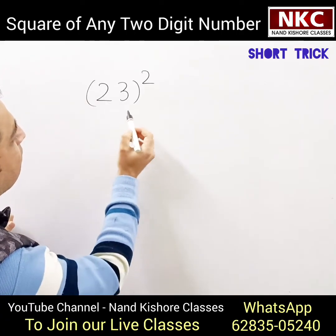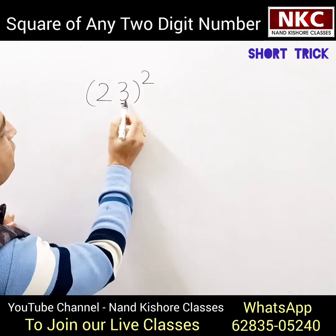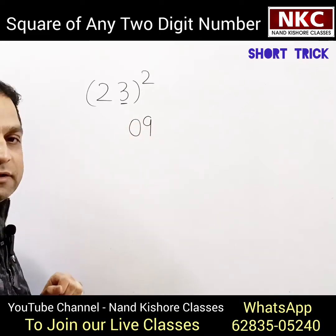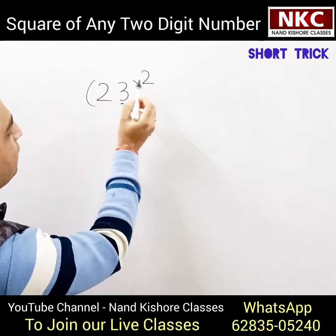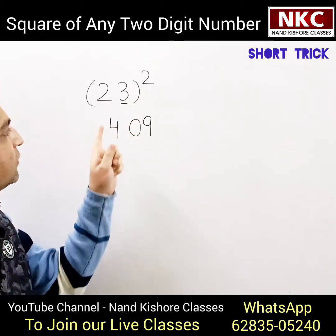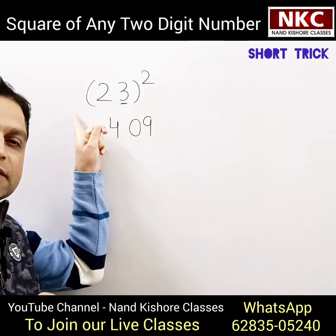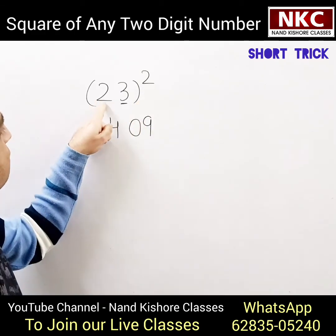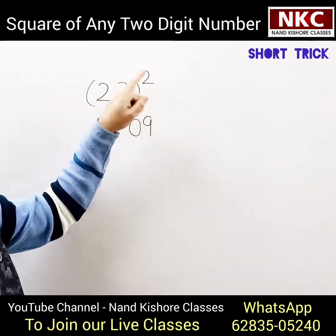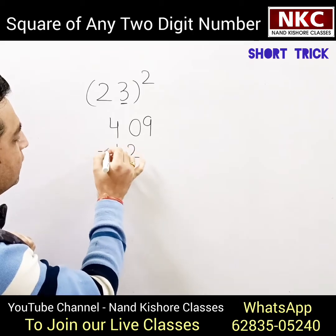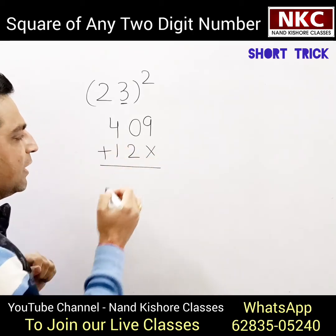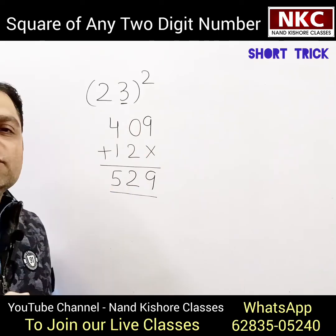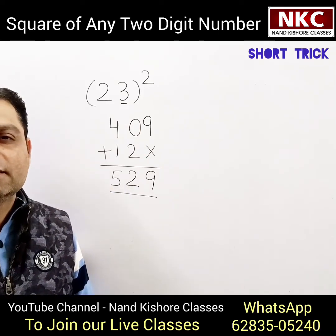Please listen very carefully. The digit at the units place is 3. Do the square of 3 — 3 square is 9, but we write it as 09. And 2 square is 4, so write 4. Now multiply all three visible values: 2 times 3 is 6, 6 times 2 is 12. Write 12 here and add them, keeping the last place blank. You get 9, 2, then 5 — meaning 23 square is 529.